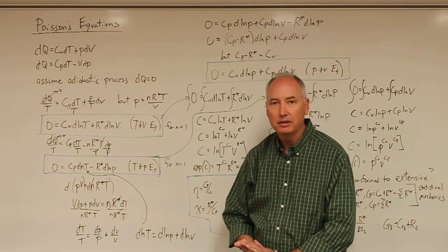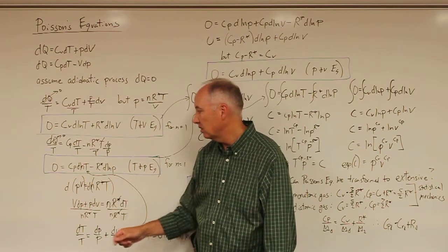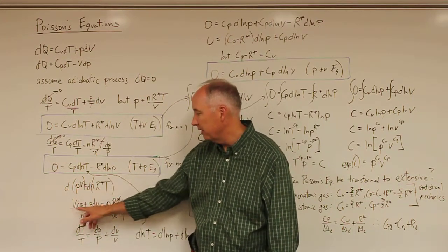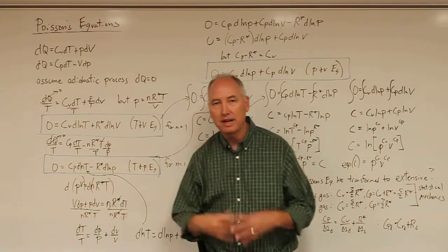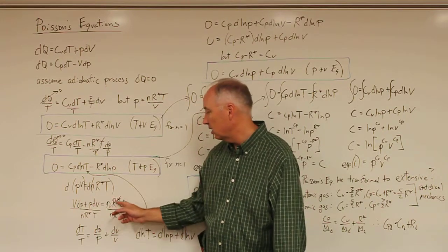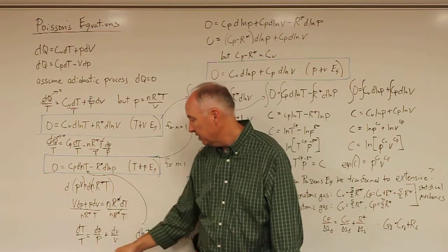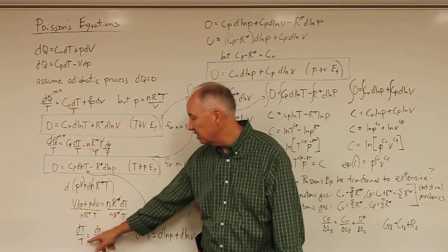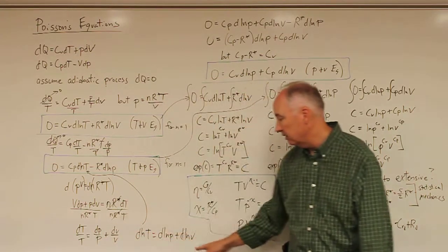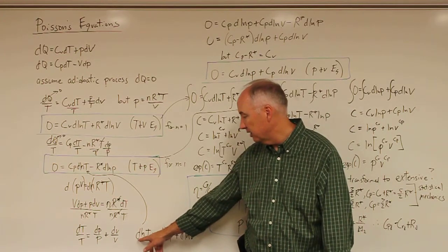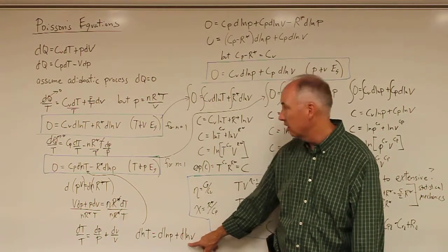The next step involves a nice math trick, which is basically taking the derivative of the ideal gas law. The derivative of pV is equal to V dp plus p dV, and the derivative of the right side, if we hold our mass of our air parcel constant, is n R* dT. Dividing both sides by n R* T, you end up with dT over T equals dp over p plus dV over V. In differential form, the derivative of the natural log of T equals the derivative of the natural log of P plus the derivative of the natural log of V.